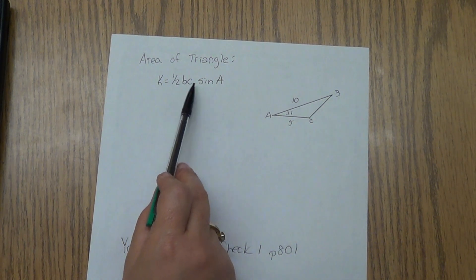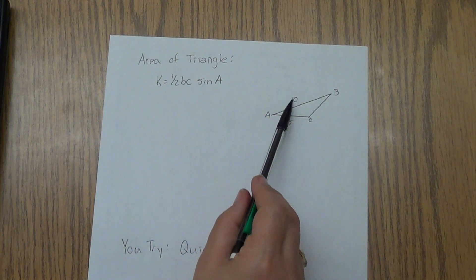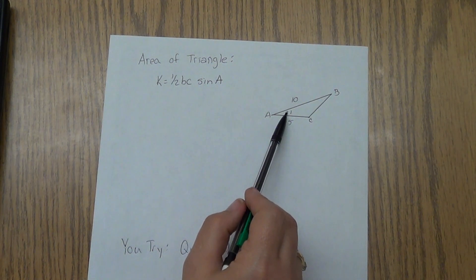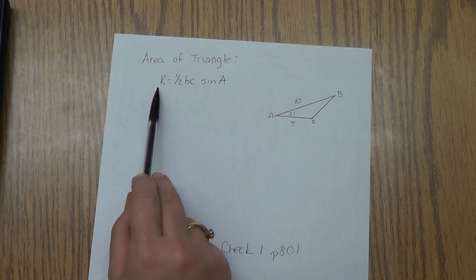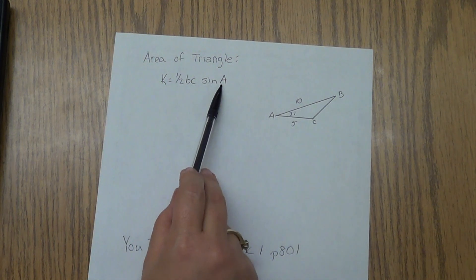And again, don't get hung up on those letters. Just remember, it's the two sides not across from your angle times the sine of the angle. Why are they using K here? Because they don't want to confuse area A with the A over here.